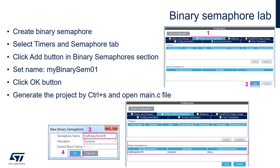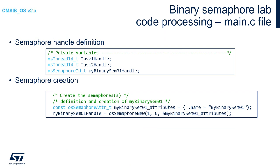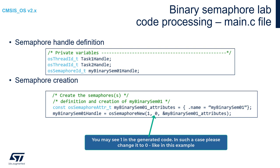After these operations, please generate the project and open the Main.c file. In Main.c, we can notice new handlers within the private variables: there are two handlers for the tasks — Task1Handle and Task2Handle — and also a handler for our binary semaphore. Within the main function, after hardware initialization, we can see the semaphore creation process. At the beginning there is a set of attributes — in this case only the name — and then, in the second line, using OSSemaphoreNew, there is a creation of a new binary semaphore.